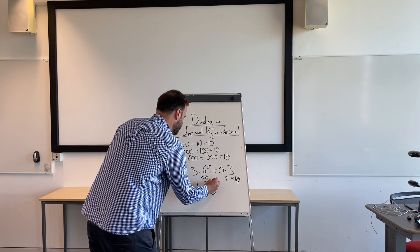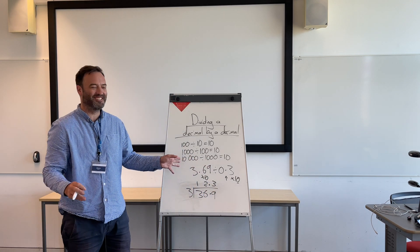So, what would we end up with? We'd end up with 36.9 divided by 3. [Works through calculation: 1, 2, 1, 3] And you're welcome to check with a calculator. It works.